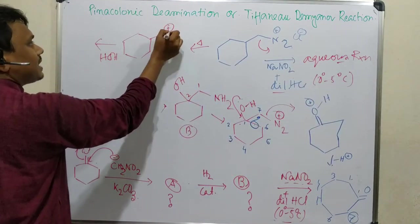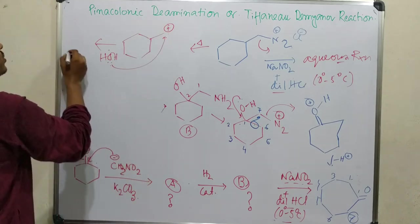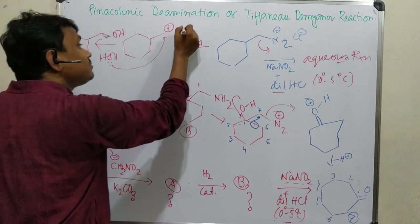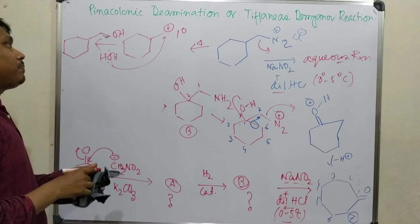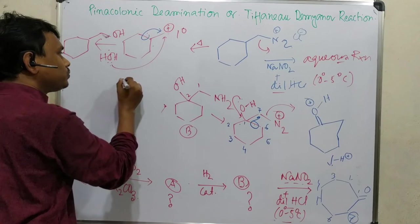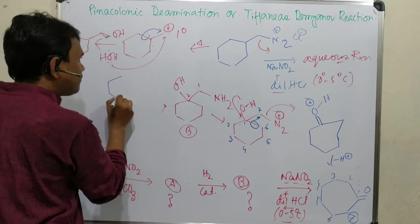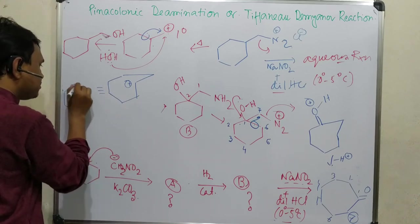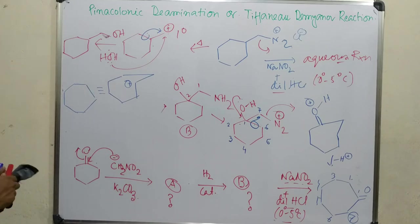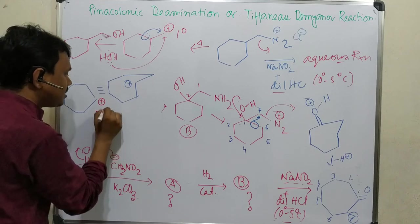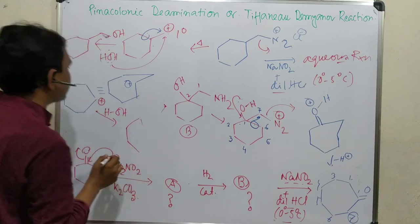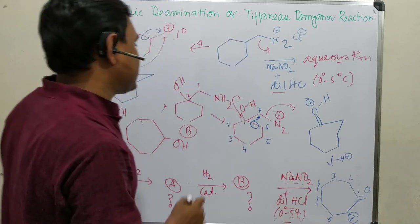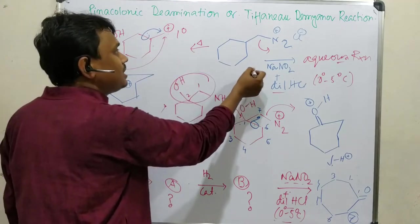Since the reaction uses aqueous NaNO₂/HCl conditions, water can attack the carbocation center and, after loss of a proton, gives a —CH₂OH product (a primary alcohol). Alternatively, the rearranged seven-membered ring carbocation reacts with water to give a seven-membered ring alcohol. Note the key difference: if there is a 1,2-amino alcohol, a ketone forms via the pinacol-type rearrangement; if there is only an amine (Tiffeneau/Demjanov without OH), an alcohol is produced.